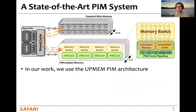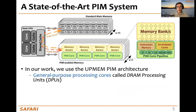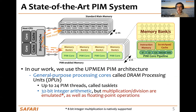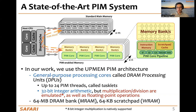In our work, we use the UPMEM PIM architecture, where the PIM cores are general-purpose processing cores called DRAM Processing Units, or DPUs. They are fine-grained multi-threaded and run up to 24 PIM threads. They support 32-bit integral arithmetic, but multiplication and division are emulated, as well as floating-point operations. Each DPU has access to its own DRAM bank called MRAM and its own scratch pad called WRAM.